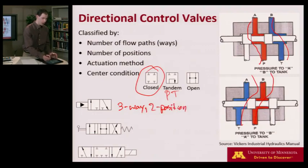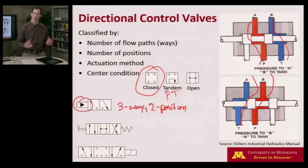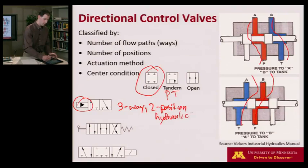Then I look for the actuation method. What's giving it away in this case is this symbol right over here. You'll notice that I have an arrow that's completely shaded in. That refers to a hydraulic pilot, so this would be hydraulic pilot operated. If that arrow was open, it would refer to a pneumatic pilot.